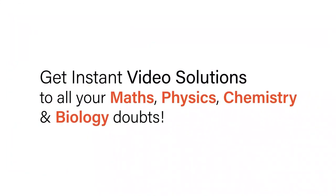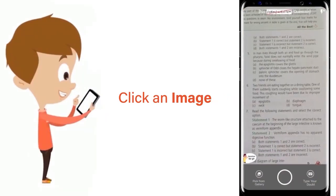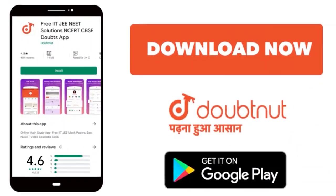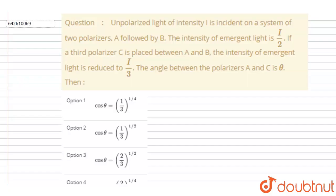With Doubtnet, get instant video solutions to all your maths, physics, chemistry, and biology doubts. Just click the image of the question, crop the question, and get instant video solution. Download Doubtnet app today. Hello everyone, unpolarized light of intensity I is incident on a surface of two polarizers A followed by B.